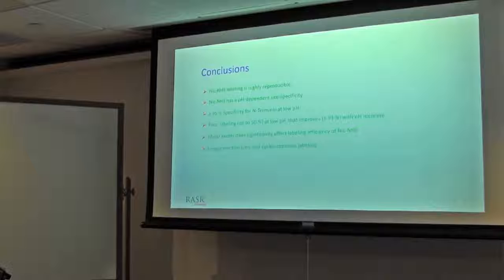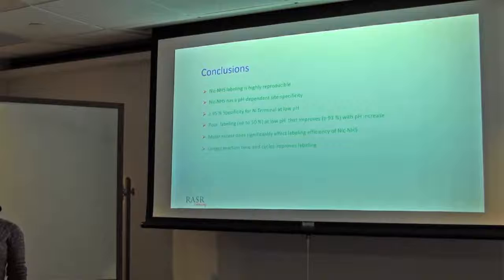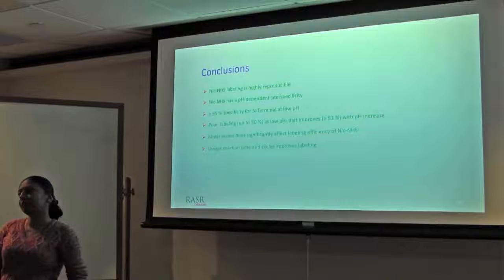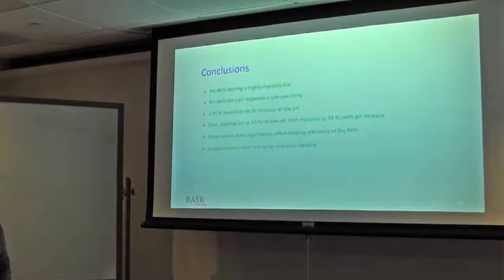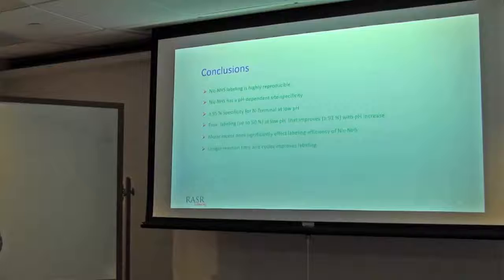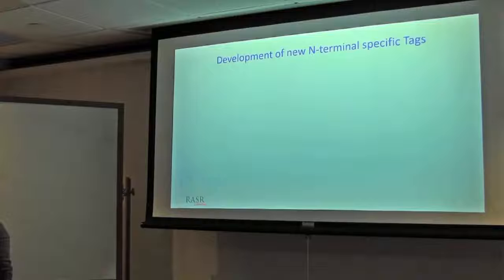Plus, longer reaction time and maybe more cycles can help improve our labeling up to 100%. I would conclude over here this part that we found that labeling is highly reproducible. However, at lower pH, it is specific to N-terminus but with a poor efficiency. With the increase of pH, we get better labeling, but it is present at both sides. Molar excess doesn't reflect the labeling efficiency directly. However, maybe longer reaction time and cycles can help, but these reactions are ongoing. At the moment, I don't have results with this.